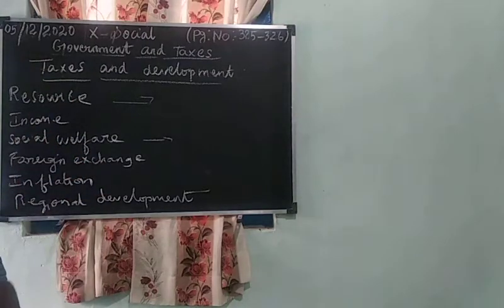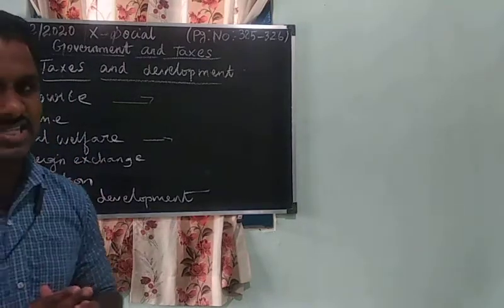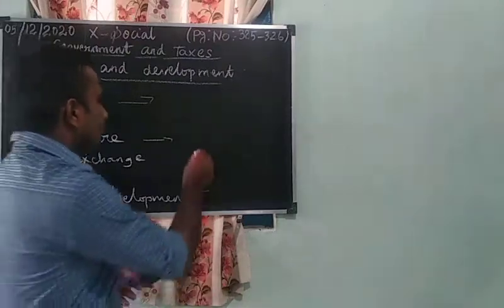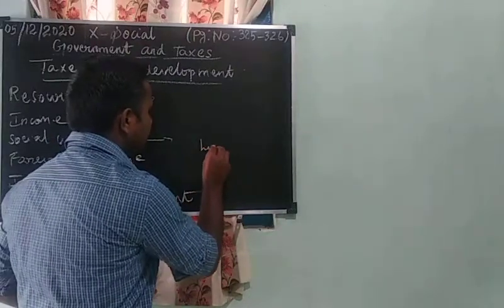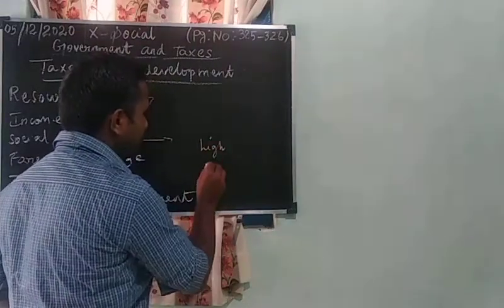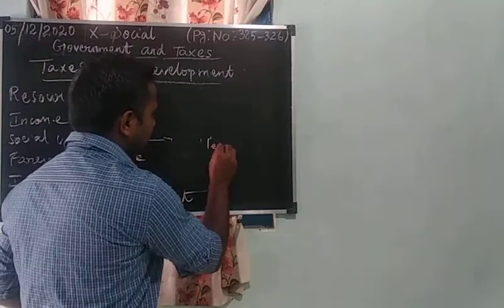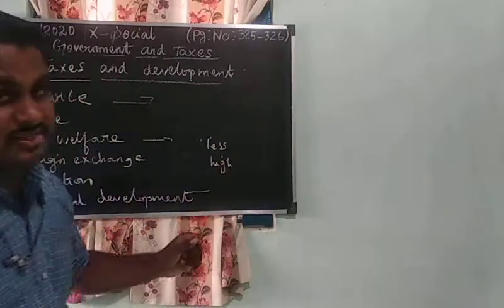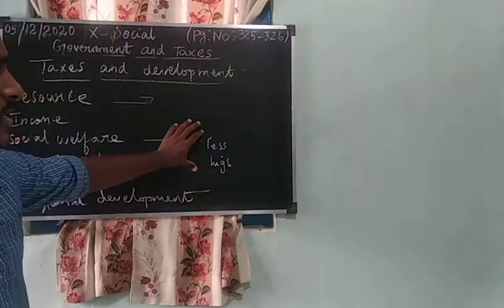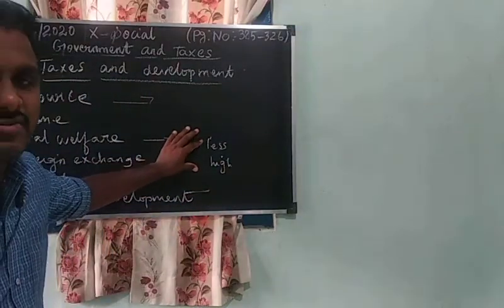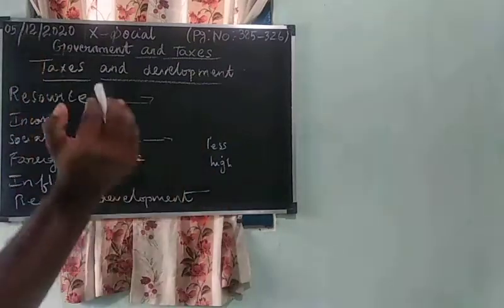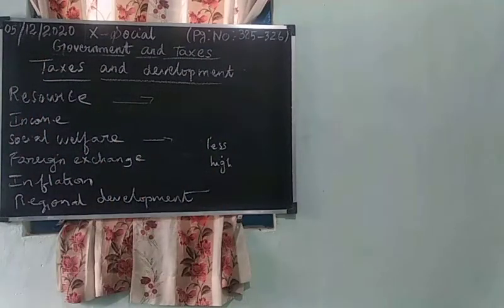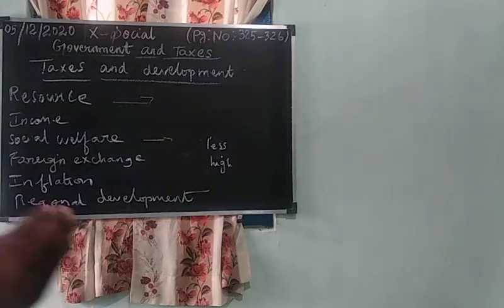The next purpose is controlling Inflation. Inflation means the price of goods is high and the value of money is less. To control inflation, the government reduces taxes on commodities, making prices lower and stabilizing the economy.